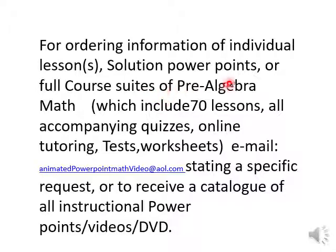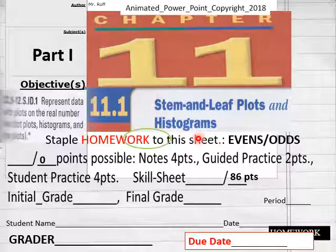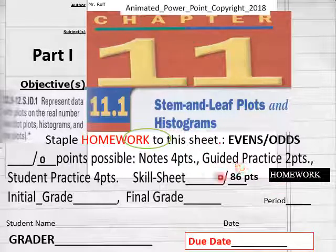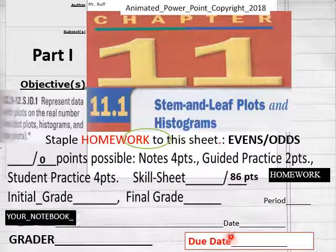Everybody, we're getting ready to do lesson 11.1 pre-algebra math homework for today. Today's homework lesson has 86 points on your homework sheet. Have that out in front of you: name, date, period, students, due date here for onliners and homeschoolers.